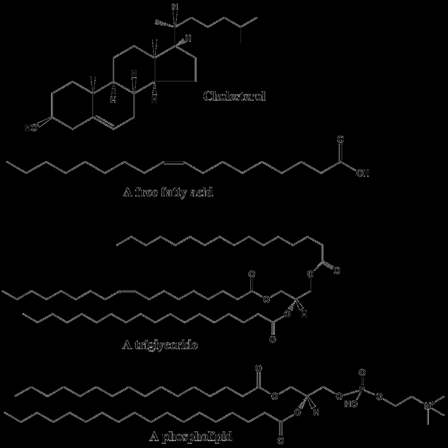Beta-oxidation is the metabolic process by which fatty acids are broken down in the mitochondria or in peroxisomes to generate acetyl-CoA. For the most part, fatty acids are oxidized by a mechanism that is similar to, but not identical with, a reversal of the process of fatty acid synthesis. Two carbon fragments are removed sequentially from the carboxyl end of the acid after steps of dehydrogenation, hydration, and oxidation to form a beta-keto acid, which is split by thiolysis. The acetyl-CoA is then ultimately converted into ATP, CO2, and H2O using the citric acid cycle and the electron transport chain. Hence the citric acid cycle can start at acetyl-CoA when fat is being broken down for energy if there is little or no glucose available. The energy yield of the complete oxidation of the fatty acid palmitate is 106 ATP. Unsaturated and odd-chain fatty acids require additional enzymatic steps for degradation.